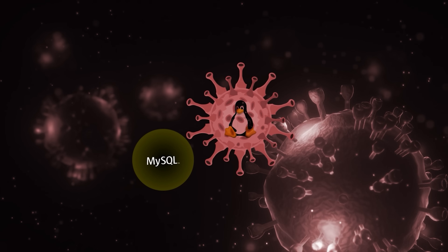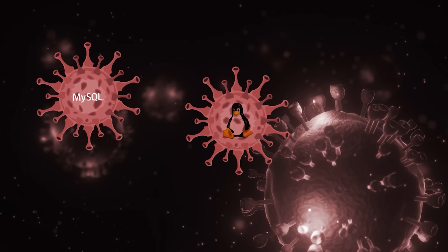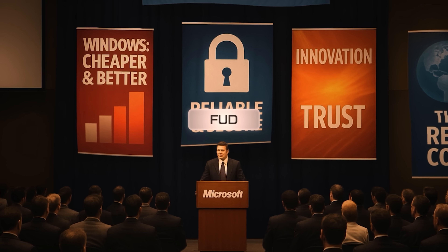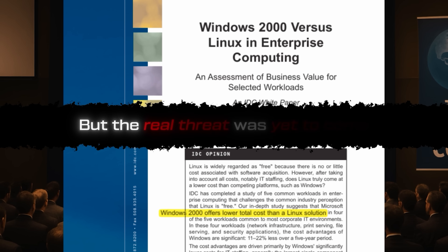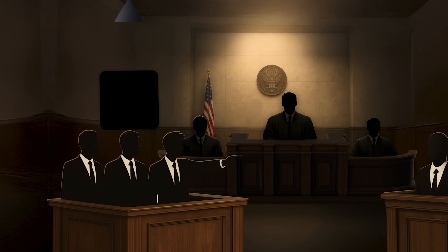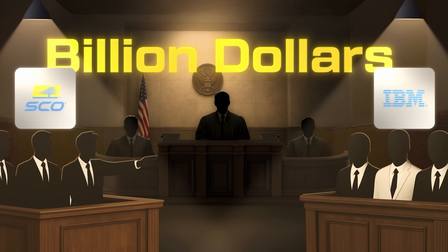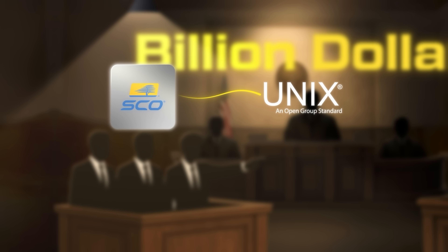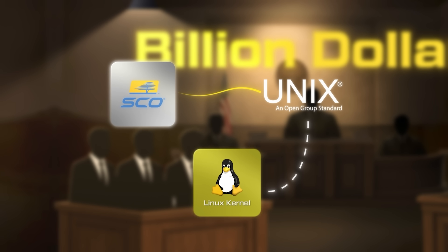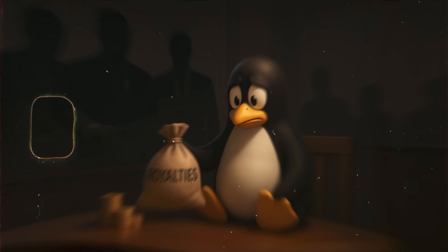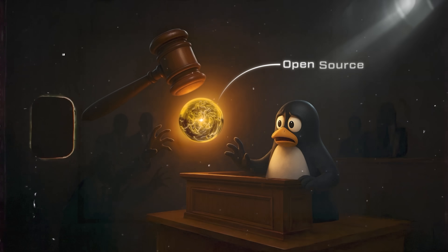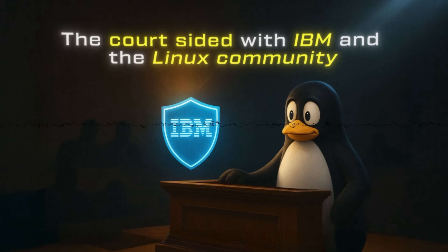But as Linux rose, it awakened a giant. Microsoft, the undisputed king of software, saw this free operating system not as a curiosity, but as a threat. "Linux is a cancer that attaches itself, in an intellectual property sense, to everything it touches." Microsoft launched a campaign of Fear, Uncertainty and Doubt — FUD — publishing studies to prove that its own Windows operating system was cheaper and better. In 2003, a company called the SCO Group sued IBM for a billion dollars, claiming that proprietary Unix code which SCO claimed to own had been illegally copied into the Linux kernel. It was an existential threat: if SCO won, Linux could be mired in legal battles for years, or worse, forced to pay royalties on every copy. The lawsuit was a battle for the very soul of open source. The entire community rallied, and after years of brutal legal warfare, the court sided with IBM and the Linux community. The project was safe.